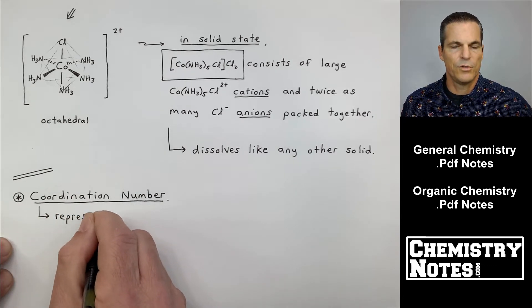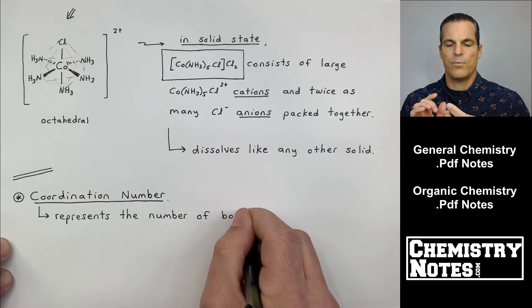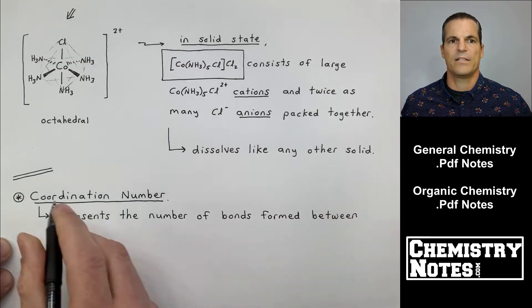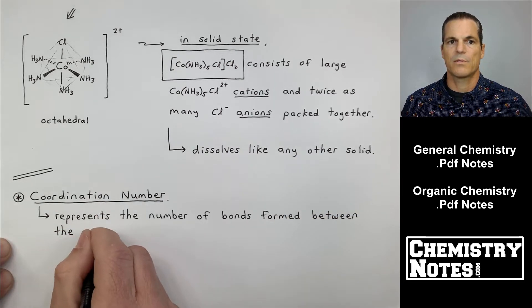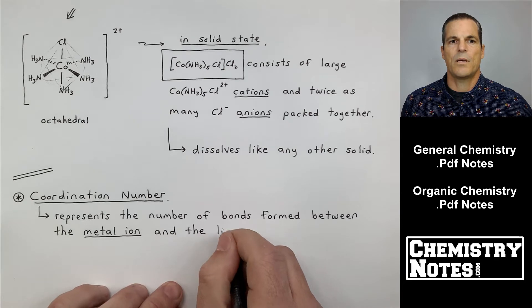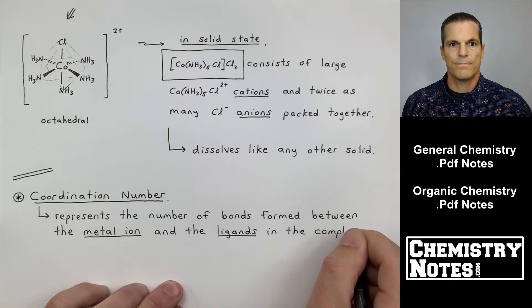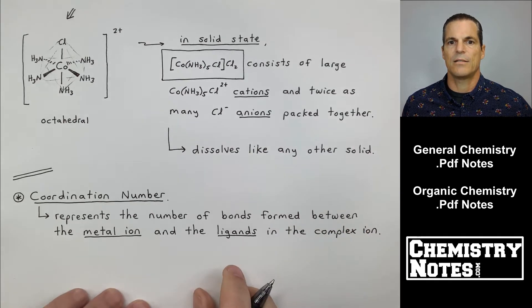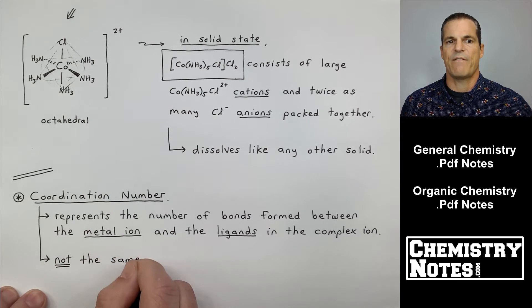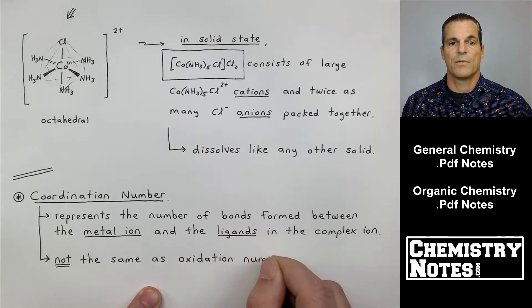Yet another new term. So far we've learned about coordination compound. We've learned ligand and we have learned counter ion and complex ion. Here's a new term. It's actually a phrase coordination number. So coordination number has nothing to do with oxidation number. Coordination number represents the number of bonds formed between the metal ion and the ligands in the complex ion. And I'm just reiterating here. So we have it in our notes. Coordination number is not the same as oxidation number.